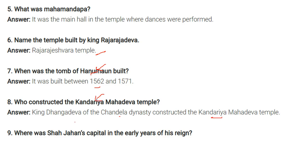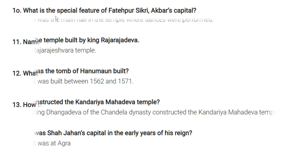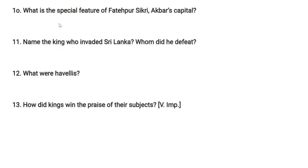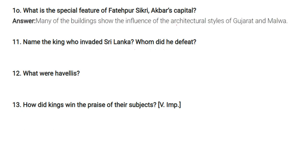Shah Jahan's capital in the early years of his reign was Agra. The special feature of Fatehpur Sikri, Akbar's capital, is that many of the buildings show the influence of the architectural styles of Gujarat and Malwa.